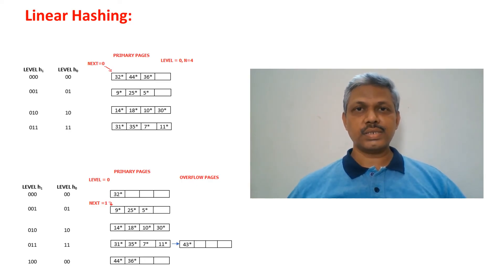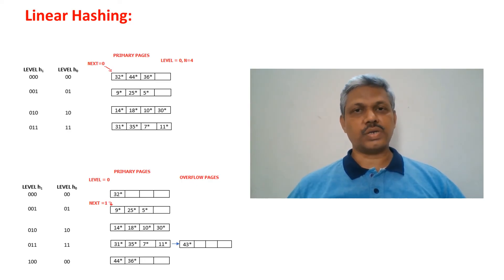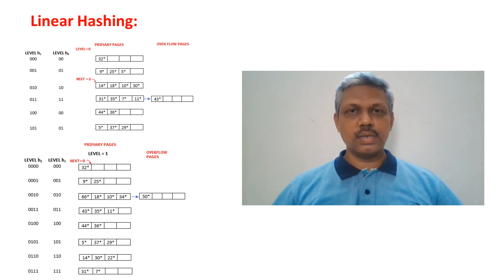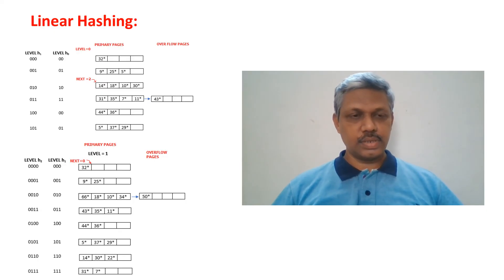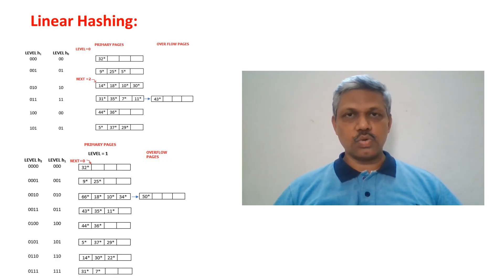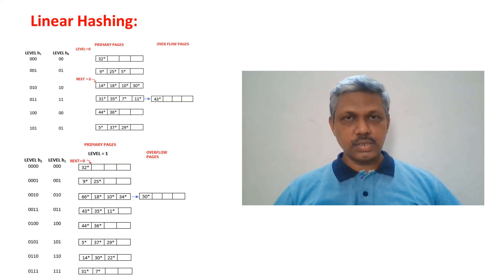In continuation of the last slide, we can observe that the level has been increased to one because all eight pages are filled and values are redistributed into eight pages — all pages have been split into eight pages. At this level, h1 and h2 are the hash functions we need to look for. The next value is set back to zero because it has gone back to zero again once the complete cycle is filled.